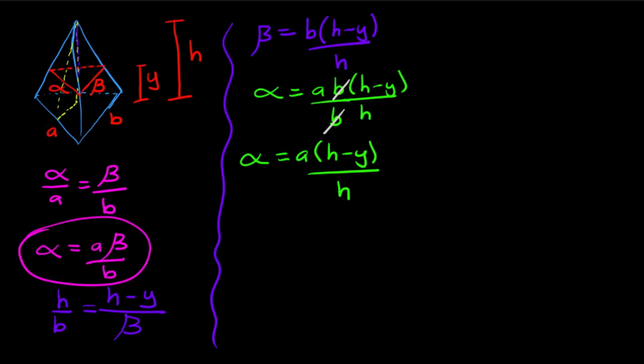Now let's look at our cross-section again. This is an equilateral triangle, so this side is alpha. Remember we labeled it beta, but since it's really an equilateral triangle, that's alpha as well.